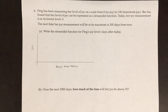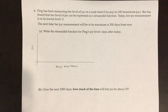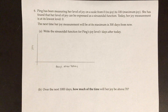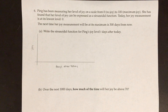Ping has been measuring her level of joy on a scale from zero, no joy, to a hundred, maximum joy. She has found that her level of joy can be expressed as a sinusoidal function. Today her joy measurement is at its lowest level, zero. The next time it will be at its maximum is 300 days from now.